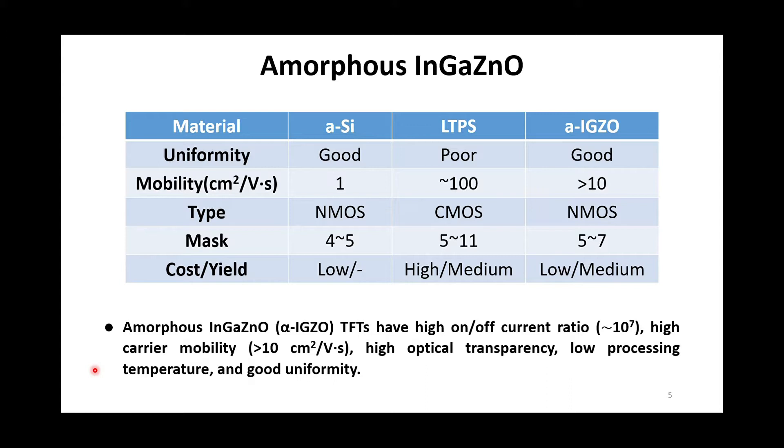IGZO have been widely applied on active matrix organic LED and displays. To make the displays have advantages of high performance, low cost, and low power, system-on-panel is the main trend in the future. Its design concept is to integrate peripheral circuits, such as radio frequency circuits, memory, driving circuits, and so on.